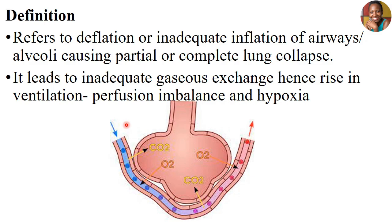What do we mean by ventilation-perfusion issues? When we breathe in and breathe out, we breathe in oxygen and carbon dioxide from our environment at different percentages. During this process, we expect that oxygen will be absorbed into the blood system by the deoxygenated blood, and carbon dioxide will flow outside so that you breathe it out. This is how we handle gaseous exchange and bring in oxygen supply to our system.